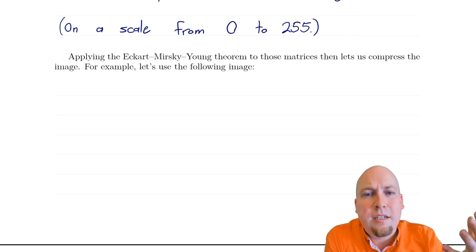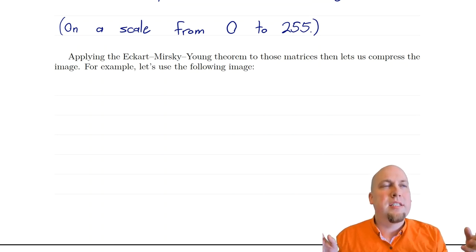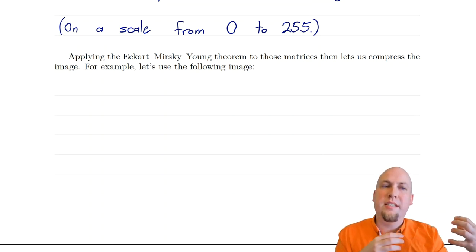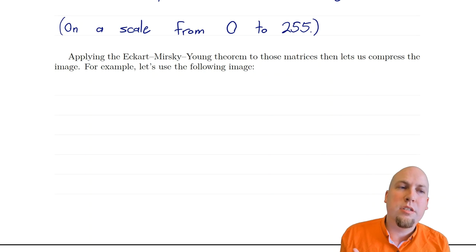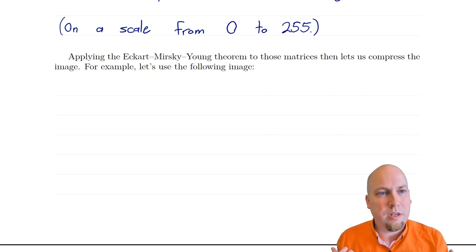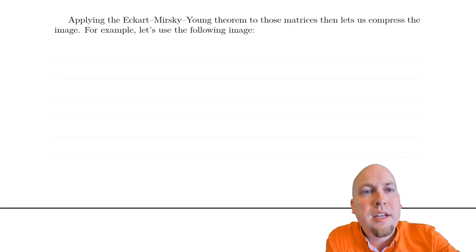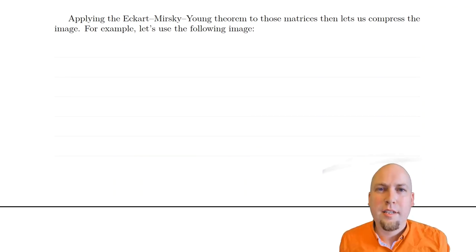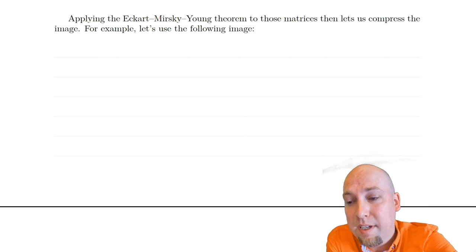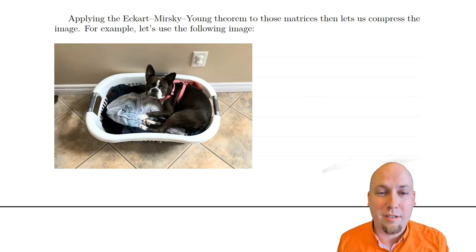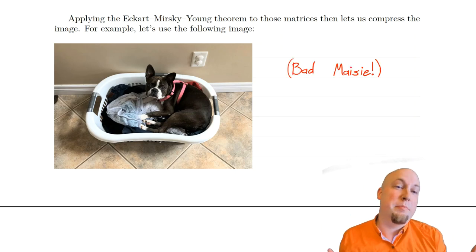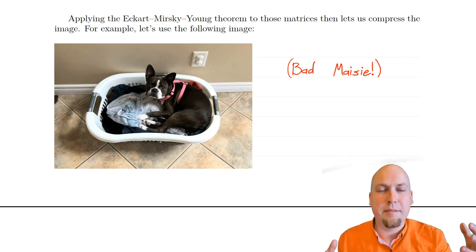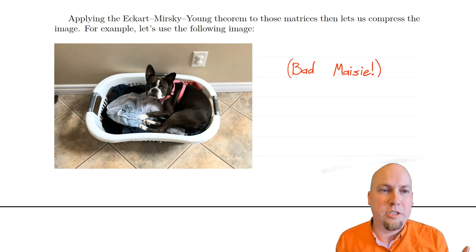If we apply the Eckart-Young-Mirsky theorem to these three matrices, we find nearby low-rank matrices that generate images looking a lot like the original but much easier to store — using fewer real numbers. So let's illustrate how this works. I'm going to do image compression on an image of my seven-month-old puppy Maisie, who has gotten into the laundry basket. Her punishment is that I'm going to compress her.